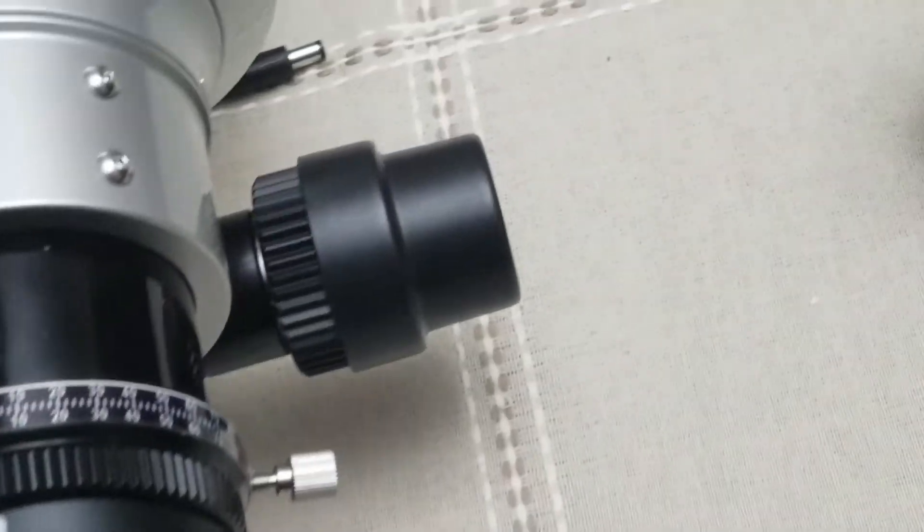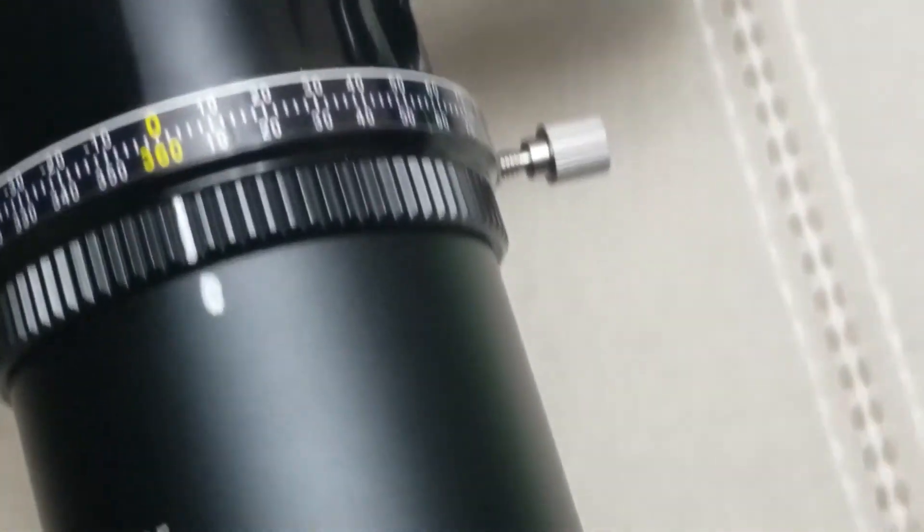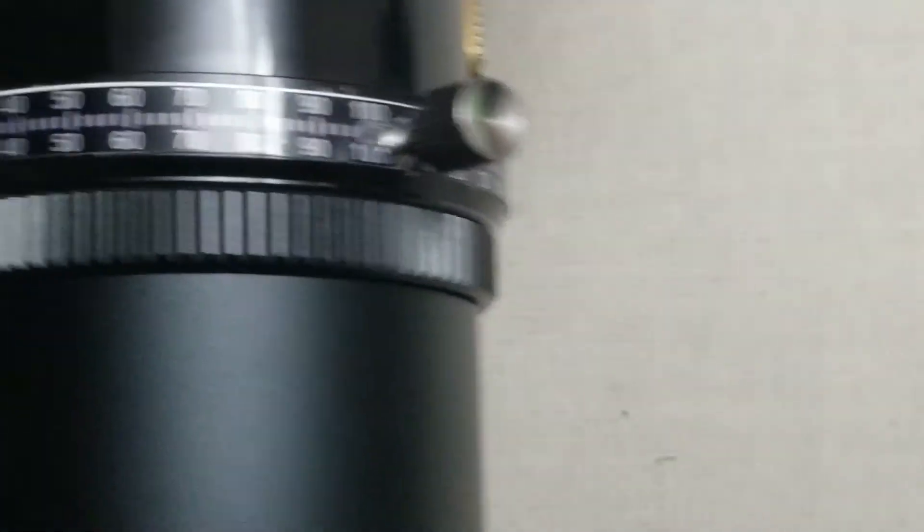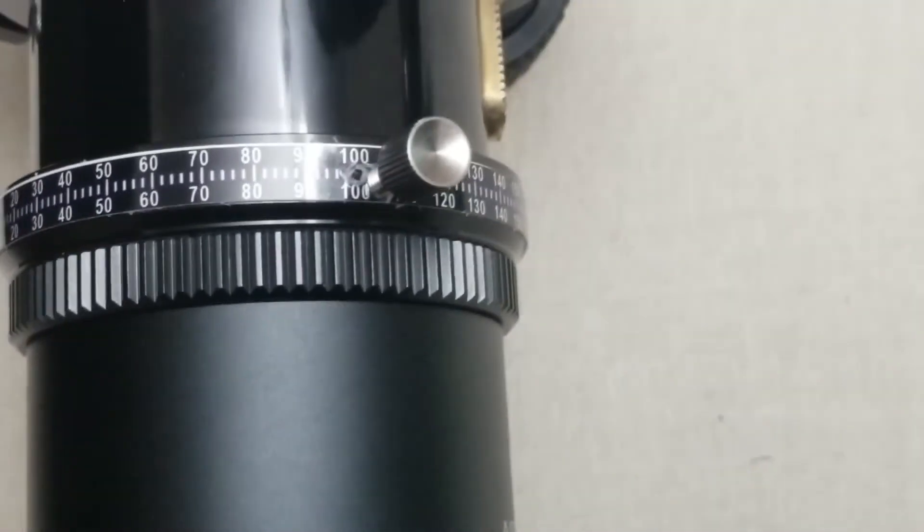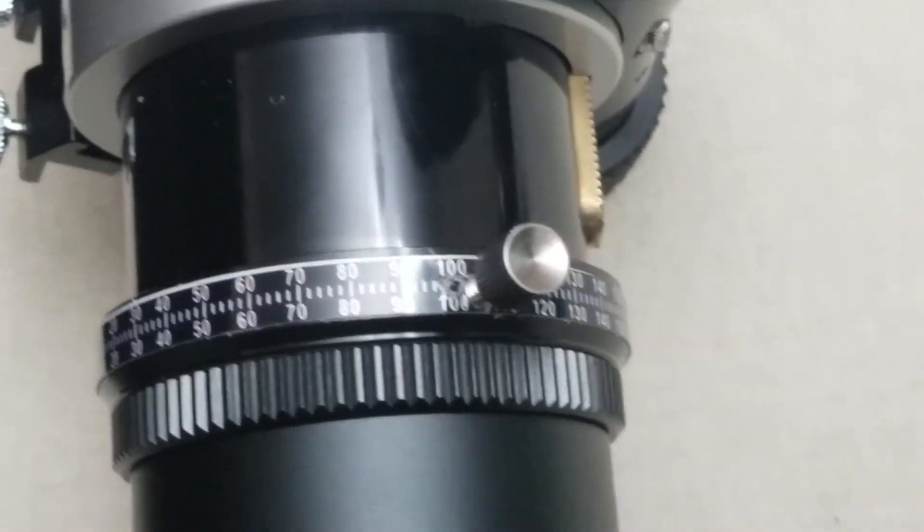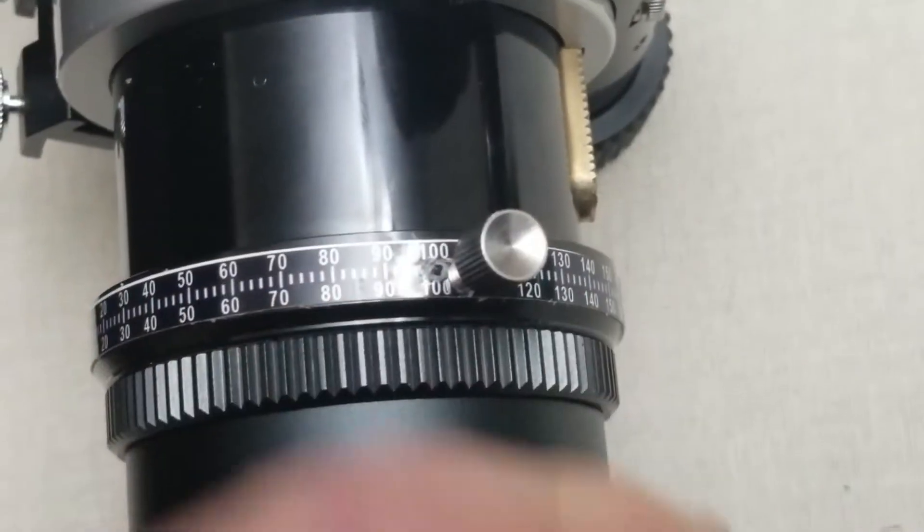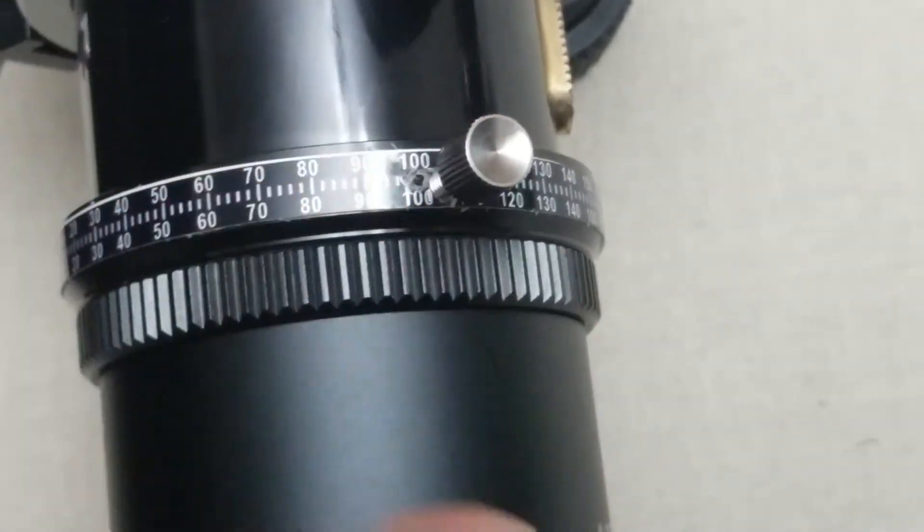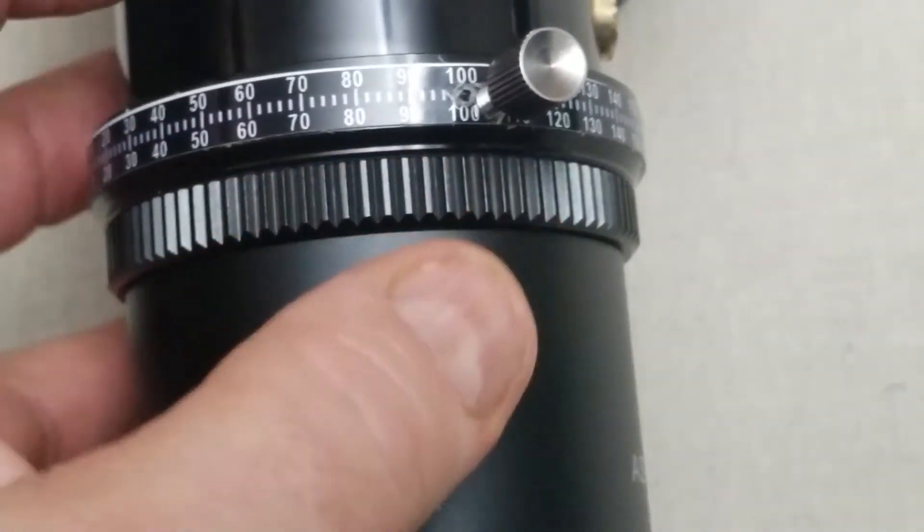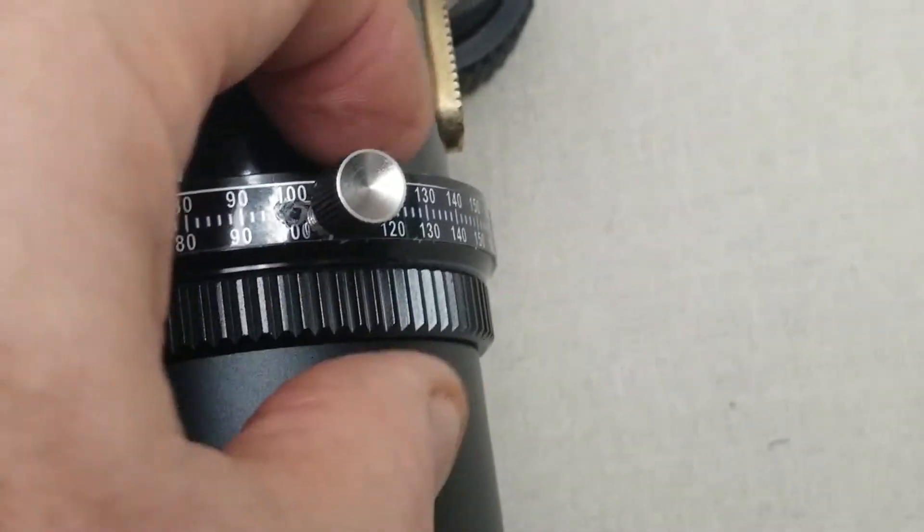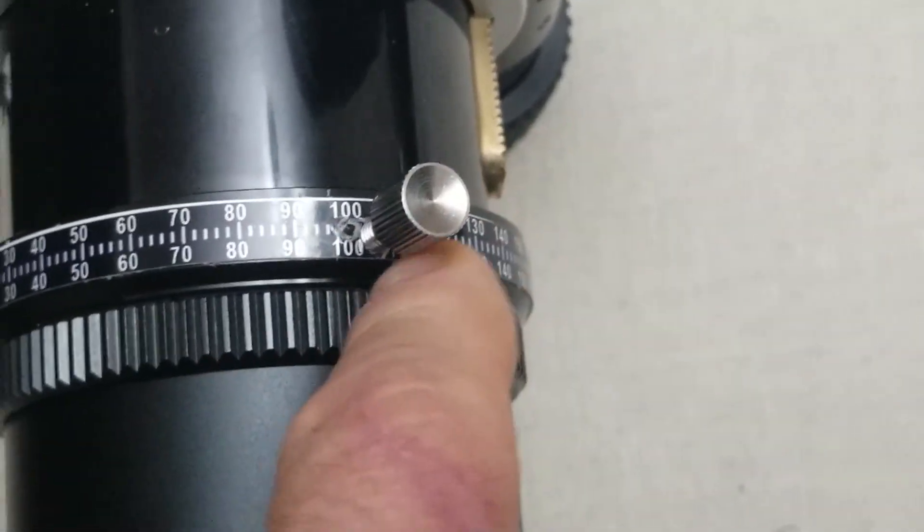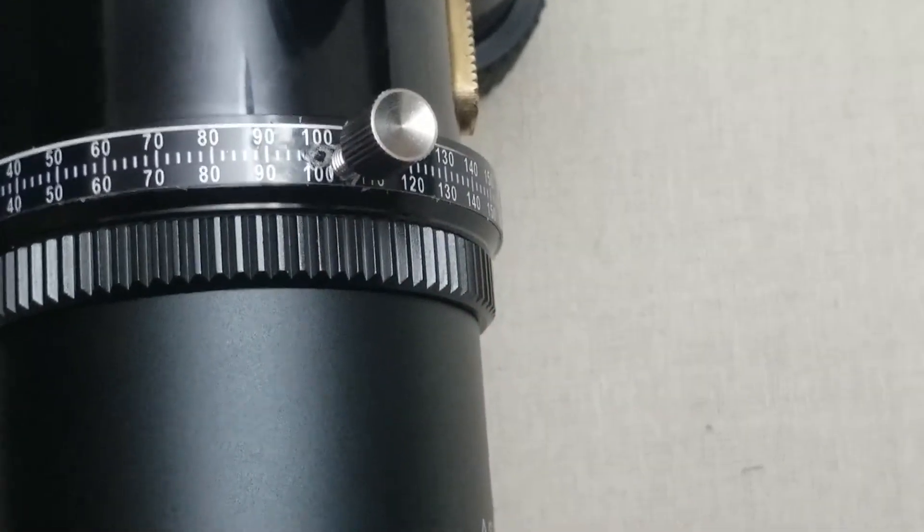Now assuming most rotators are of a similar design where you have a thumb screw, what you want to do there also—I did not, I'll admit—but it would be helpful to actually mark the focusing tube if you can, or if the ring is attached to something and you can mark that, even temporarily with something, you'd want to mark where the thumb screw is at.